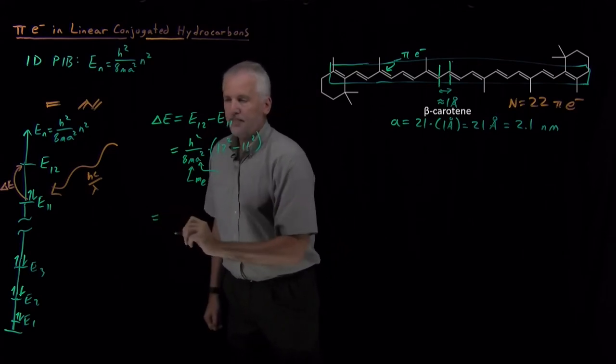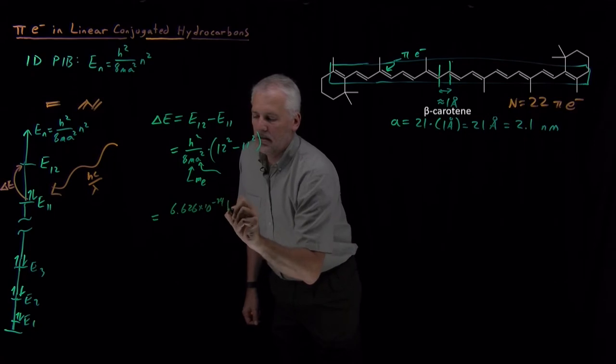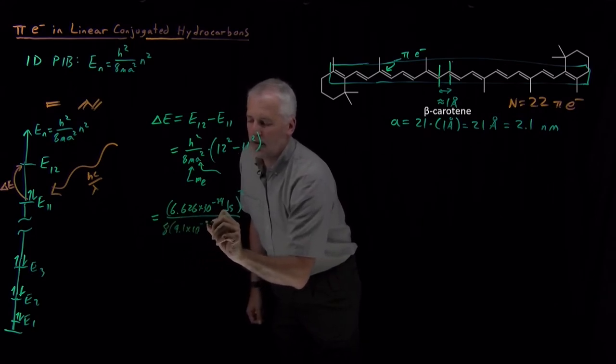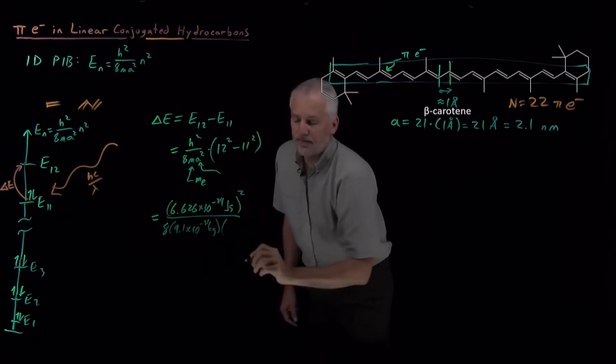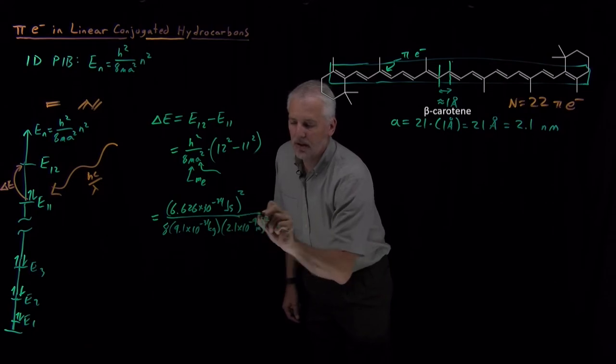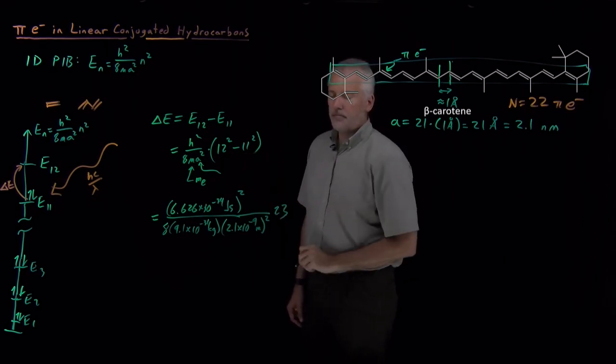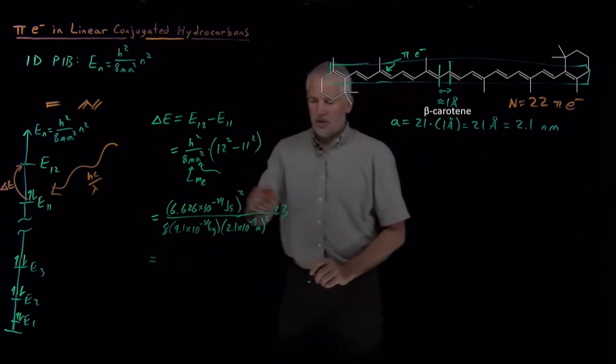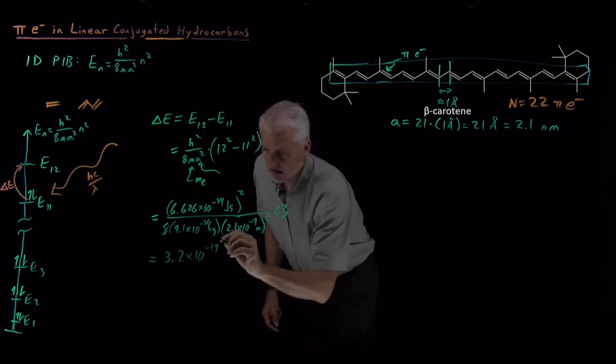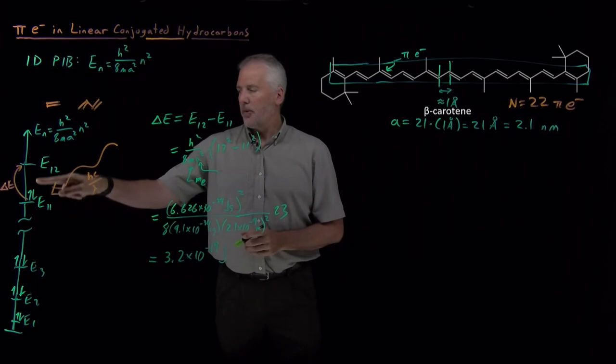So if we go to plug into this difference in energy, we can find Planck's constant squared in the numerator. The denominator, I've got an 8. I've got the mass of an electron, which is 9.1 times 10 to the minus 31 kilograms. My box length is squared, so that's 2.1 times 10 to the minus 9th meters. Don't forget to square that. I'm multiplying that by this difference, 144 minus 121. So I'm multiplying that by 23, and when I do that calculation, plug those numbers into the calculator, what I find is 3.2 times 10 to the minus 19th joules.